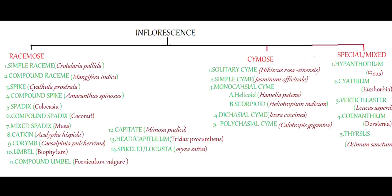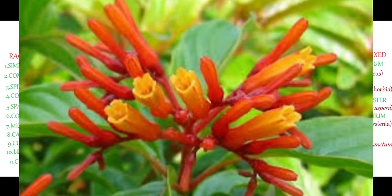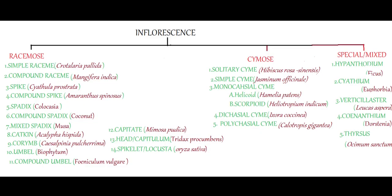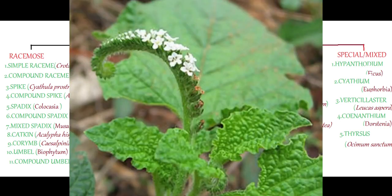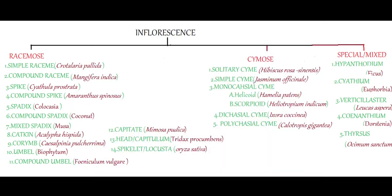The third type is monochasial cyme. Here the peduncle ends in a flower, and from the base of this flower a single lateral branch will arise, with other lateral branches also formed. Based on the nature of lateral branches, there are two different types of monochasial cyme: helicoid cyme and scorpioid cyme. In helicoid cyme, single lateral branches are formed towards one side. Example: Hamelia patens. Whereas in scorpioid cyme, lateral branches are formed on alternate sides, giving it a zigzag appearance. Example: Heliotropium indicum.